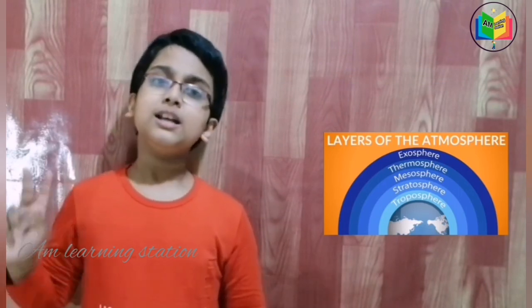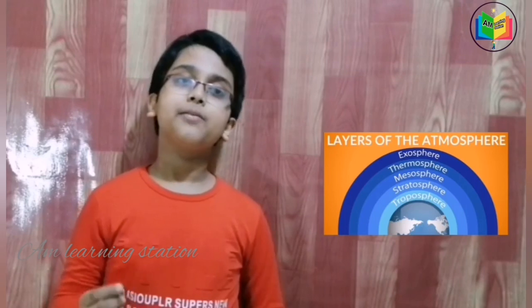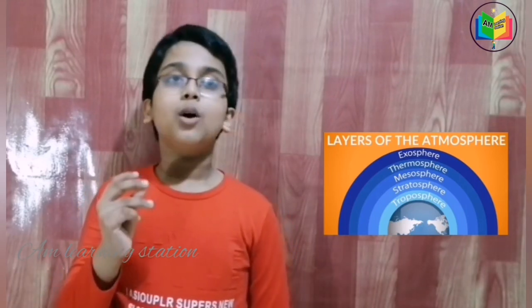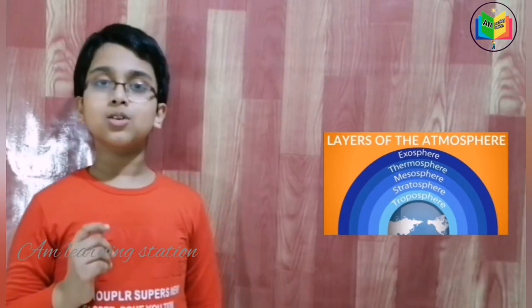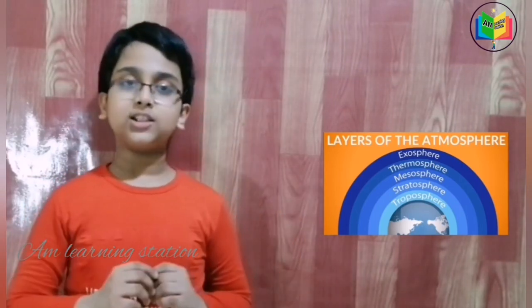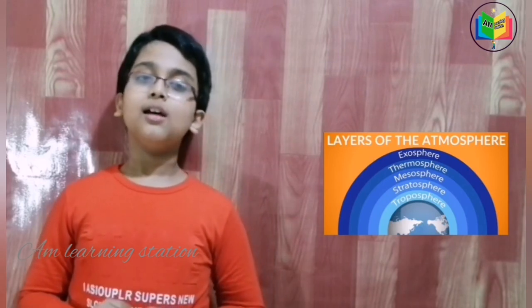Our second one is the stratosphere. It starts right above the troposphere and goes up to 50 km high. The ozone layer, which absorbs and scatters the solar UV rays, happens to be in this layer. An ozone hole is forming in the ozone layer, but the ozone hole is not actually a hole — it is just an area where the amount of ozone is smaller. But, fortunately, the ozone is starting to heal.